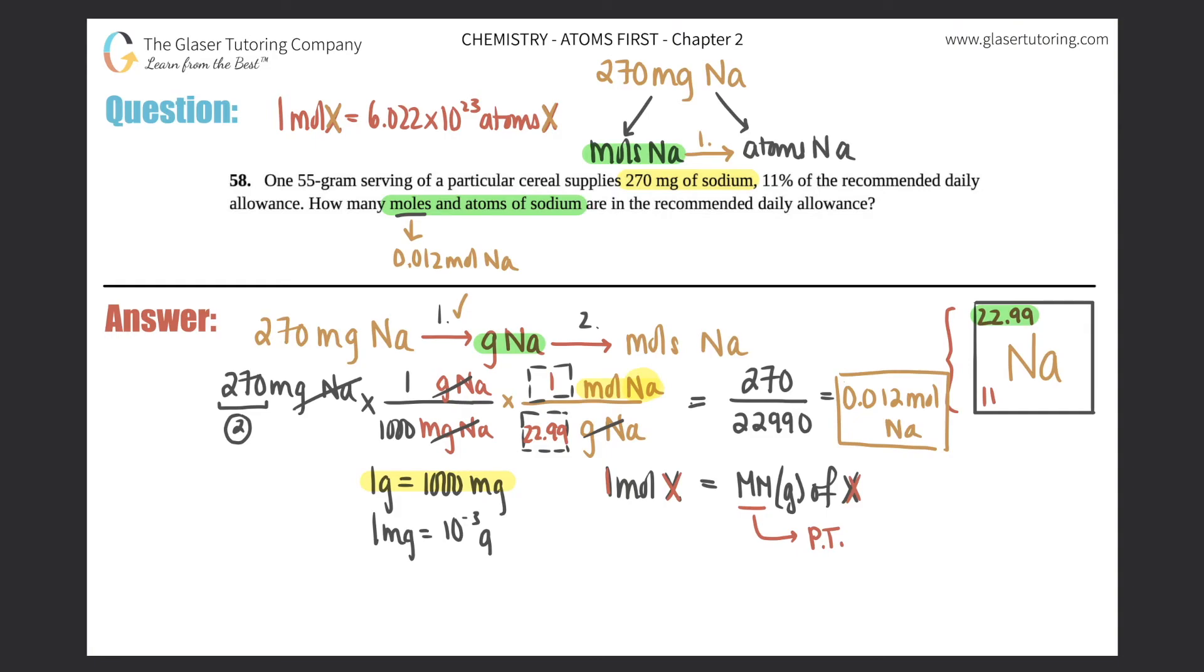So we're going to take the moles that we found out, 0.012 moles of Na. And then we just use a conversion. Mole of sodium on the bottom. Atom of sodium up top.